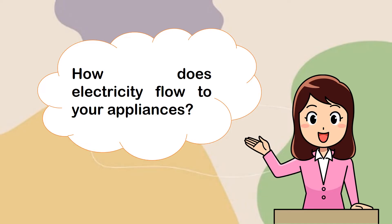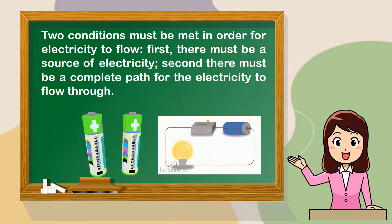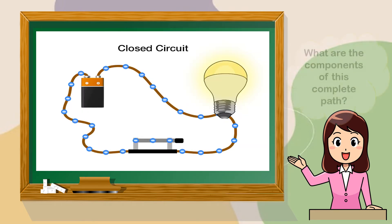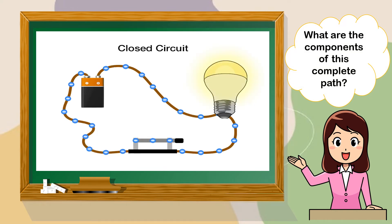How does electricity flow to your appliances? Two conditions must be met in order for electricity to flow. First, there must be a source of electricity. Second, there must be a complete path for the electricity to flow through. What are the components of this complete path?